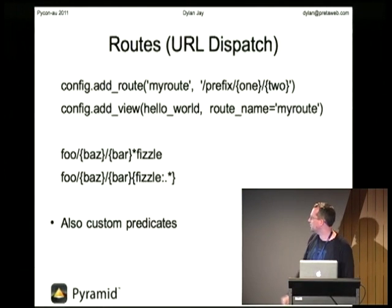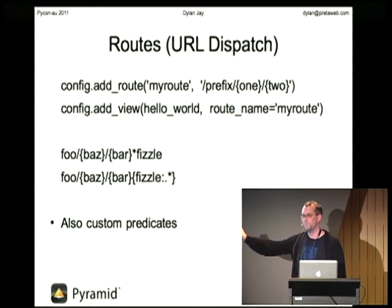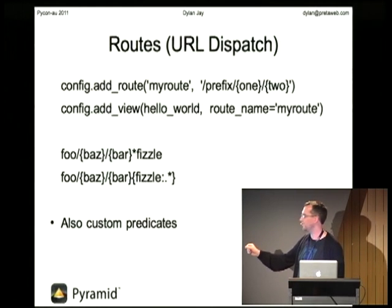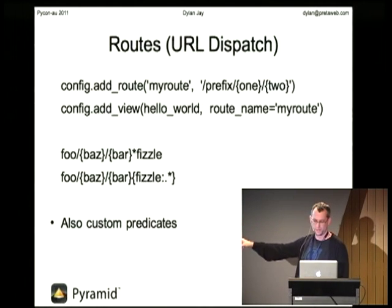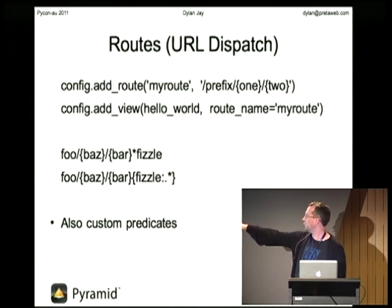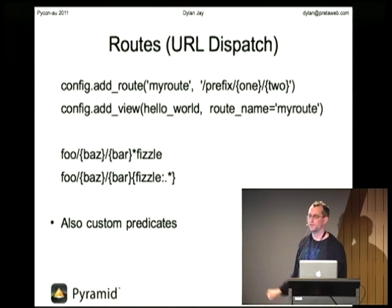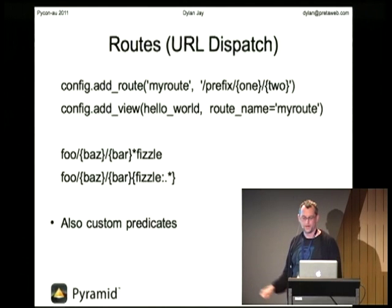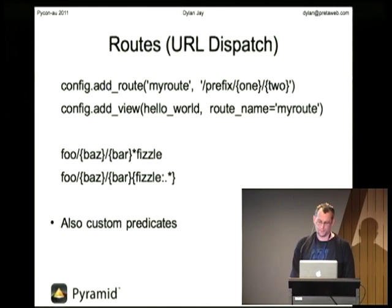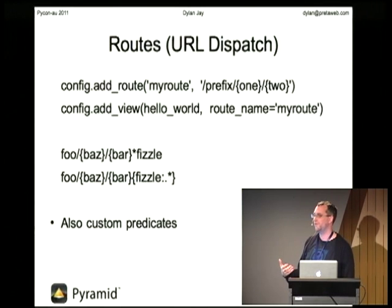We've got this idea of a wildcard at the end, which is all the rest of the path. And if we want to do more than just the default regular expression, that colon syntax on the end of the variable lets us redefine what that is — any variable in the route can have a regular expression so you can further define it. It's got a lot of plugins for doing custom predicates, so you can pretty much define how you want the matching to work using your own code.